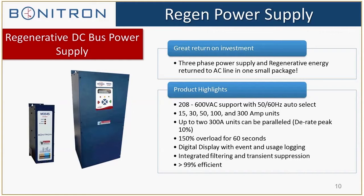If you know our products, we also used to sell the M3713 three-phase power supply module — that is virtually the same thing as combining this with our standard regen module, except you don't have to pay for the M3713. We offer the M3645P in all the same power ratings: 15, 30, 50, 100, and 300 amps as we do in our regen modules. You can parallel up to two of the 300 amp units and derate your peaks by 10% to get larger power applications. Same digital display option with event and usage logging, and same filtering and transient suppression.